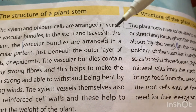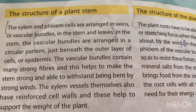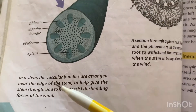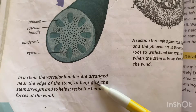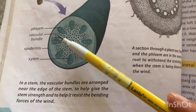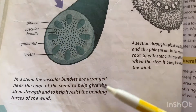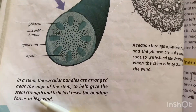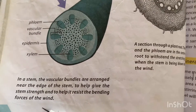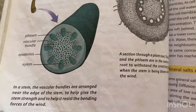Most of the ground tissue may be lost in a woody stem. The dermal tissue of aquatic plant stems may lack the waterproofing found in aerial stems. In a stem, the vascular bundles are arranged near the edges of the stem to help give the stem strength and to help it resist the bending force of the wind.